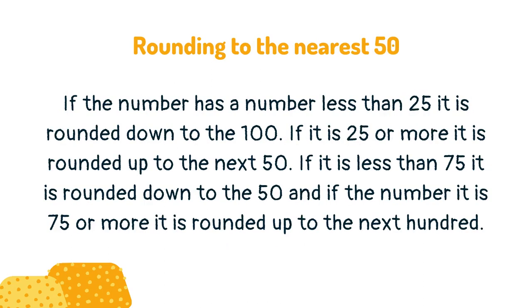If the number has a number less than 25, it is rounded down to the 100. If it is 25 or more, it is rounded up to the next 50. If it is less than 75, it is rounded down to the 50, and if the number is 75 or more, it is rounded up to the next 100.